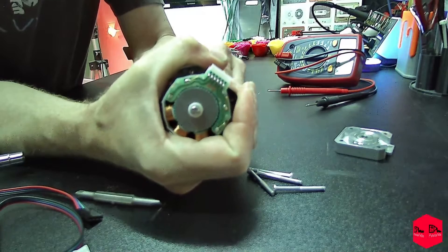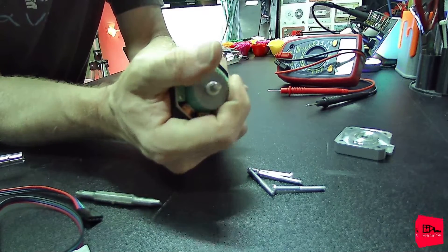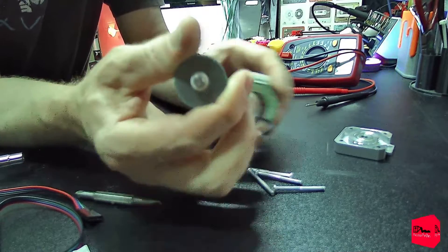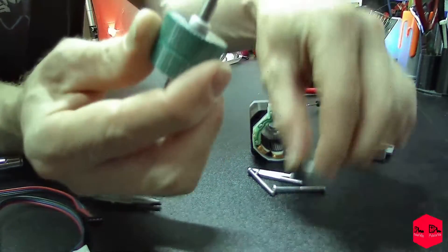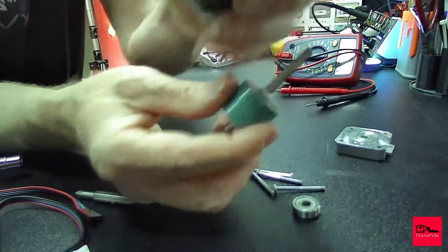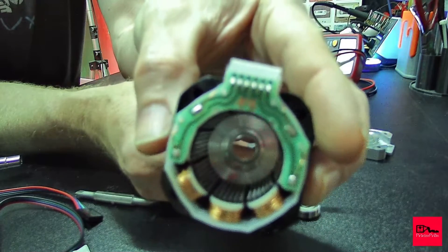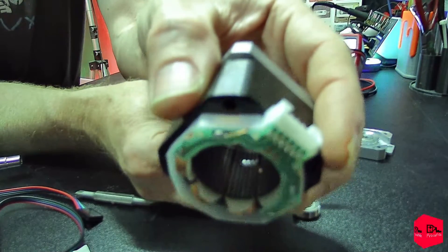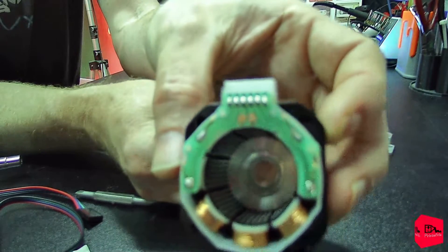And we can go ahead, push the motor out. This part is a little tough. There we go, and another bearing on the other side. Just slides right off. Here is the inside.